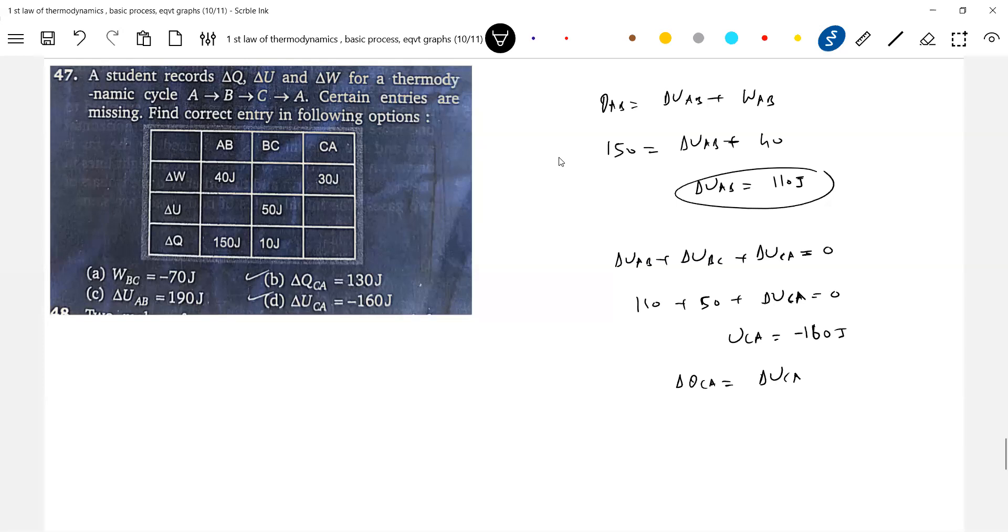ΔQ_CA equals ΔU_CA plus W_CA. ΔU_CA is what we calculated: minus 160. W_CA is 30. Okay, only thing is W_BC is left over. I think we can use this formula.